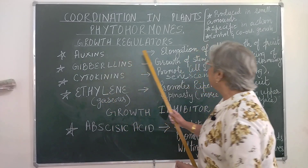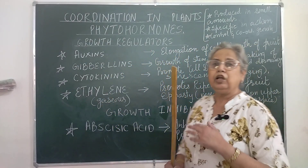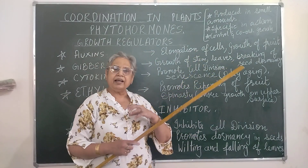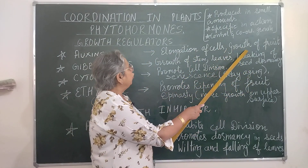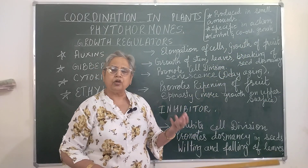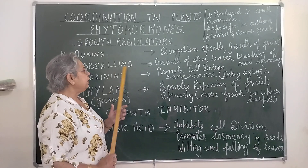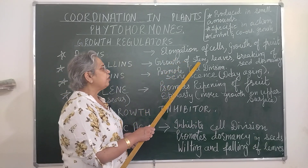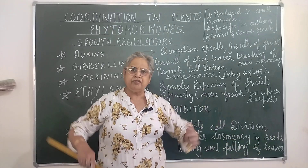What is the function of auxin? They help in elongation of cells — the cells elongate and they help in growth of fruit, growth of stem, and growth of the plant. Then gibberellins, again growth hormones — they are responsible for growth of stem and expanding of leaves.